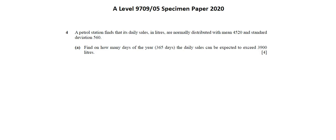To determine the number of days, I want to find the probability that sales exceed 3,900 liters and then apply that to a 365-day year. To find that probability, I'll work with the normal distribution and look up, based on the z-score, the probability in the normal distribution tables.